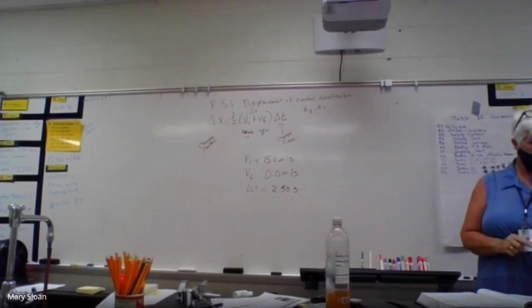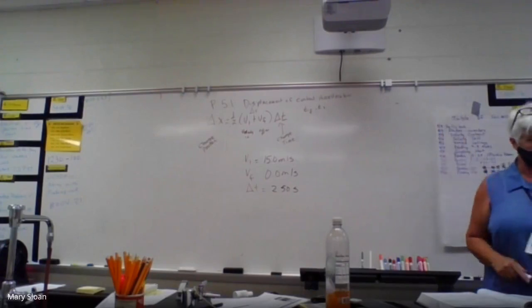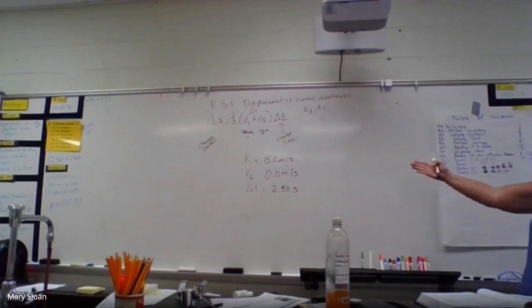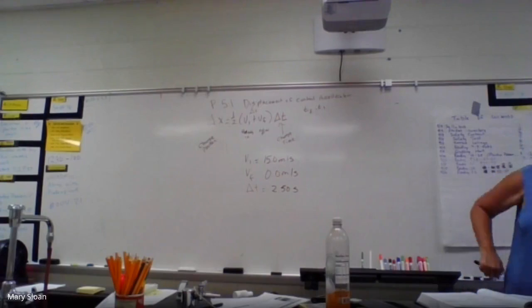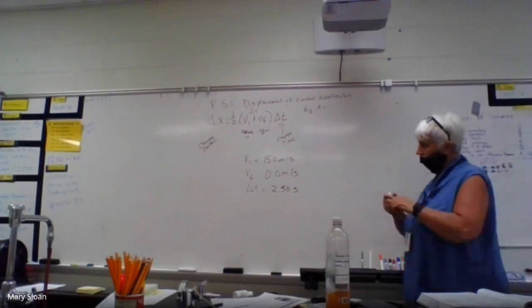It's 19, wasn't it? Yep. 18.8 meters. Now make sure we do three. We're going to do one-half times velocity initial 15.0 meters per second, add 0.0 meters per second, multiply by 2.50 seconds. What do we get as far as the calculator says? 18.75.